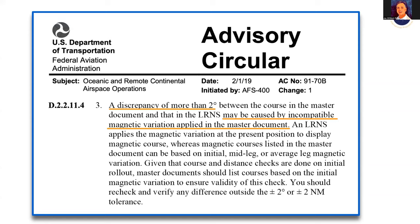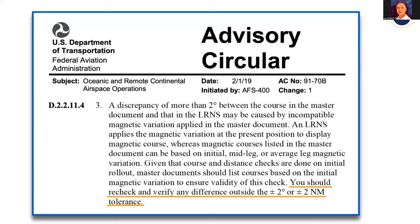We're trying to confirm that our mag course and distance validates what the FMS computed, but the truth is that the table, the computerized flight plan, a chart, or the FMS could be using different mag variation tables based on different dates — and they change rather frequently. We like to say it should be within two degrees, but there are exceptions. The Advisory Circular states master documents should list courses based on the initial mag variation to ensure validity of the check.